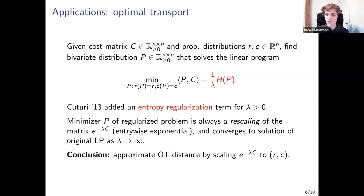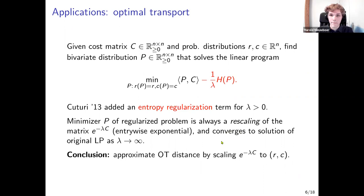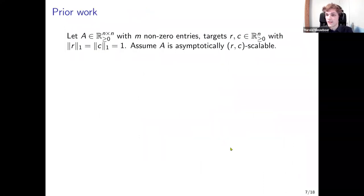So we can approximate optimal transport distances by scaling this new matrix. The algorithms for solving the original linear programs scale polynomially — something like n^{2.5} or n^3 — which is too slow for machine learning applications with large data sets. Solving matrix scaling instead is very useful because it turns out to be something we can do fast.